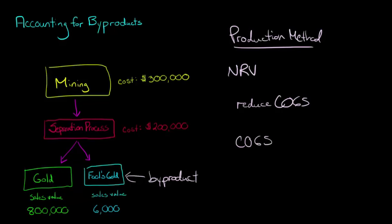So when you go and you actually sell the gold, let's say you sold all the gold, so you're going to debit cost of goods sold and you're going to credit inventory. Well, you can just debit the cost of goods sold for, instead of $500,000, it's $500,000 less the $6,000 of the byproduct. So that would be $494,000. So you've reduced your cost of goods sold.